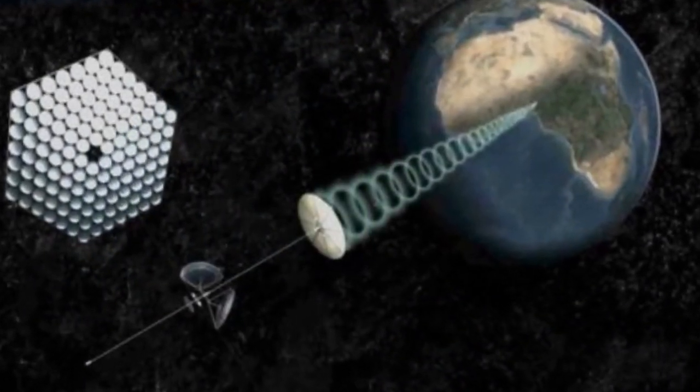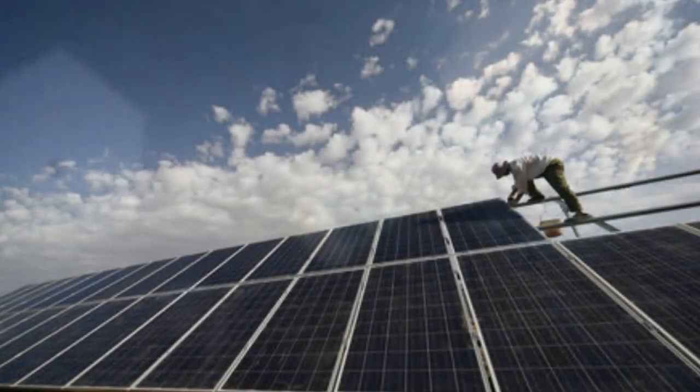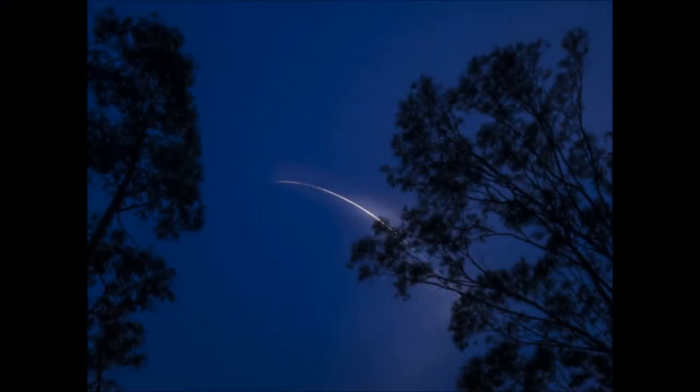The power station would be a super spacecraft on a geosynchronous orbit equipped with huge solar panels. The electricity generated would be converted to microwaves or lasers and transmitted to a collector on Earth.